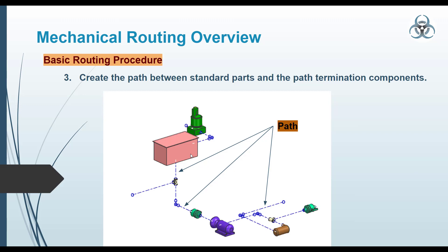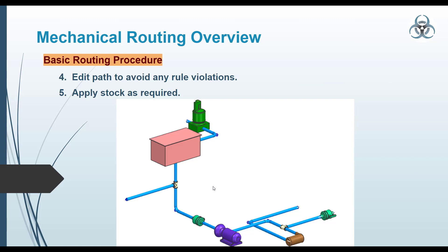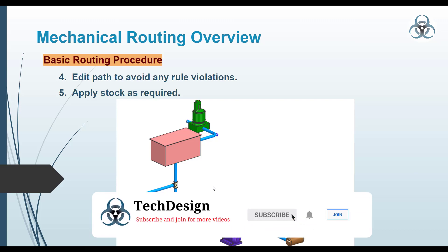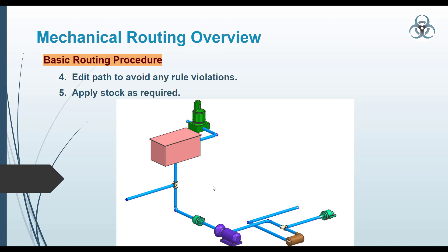Once those two sets of components are properly positioned, you can create a linear path — the routing path which is used to provide stock. These paths should be created between the components and between the standard parts. If the path is not satisfactory or if design rule violations come up, you can edit the path accordingly. Finally, you apply the stock to that particular linear path. This is an overview of the mechanical routing application.